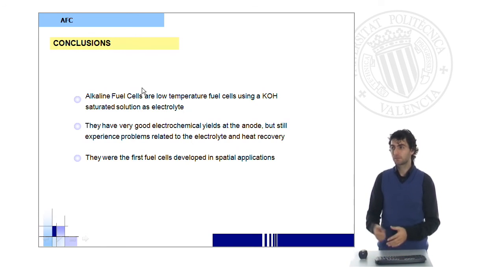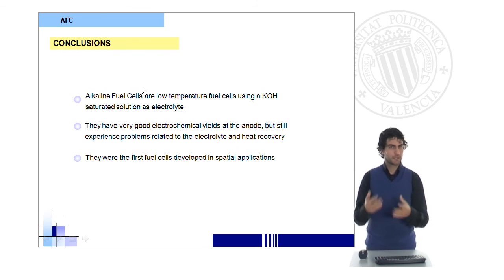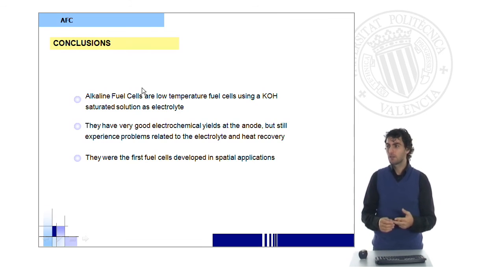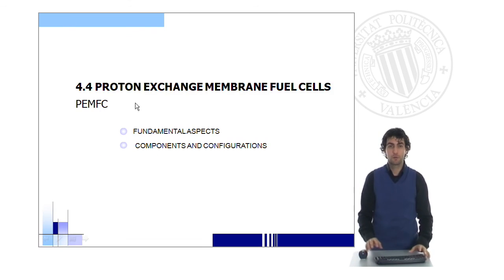As a conclusion, alkaline fuel cells are the first fuel cells to be commercialized and used in practical applications, especially for NASA in their space programs, even in the sixties. They show very good electrochemical yields, especially in the oxidation. But we still have problems related to the fact that the temperature is quite high, not so high as in other applications, and because the electrolyte may be lost since it's not solid.